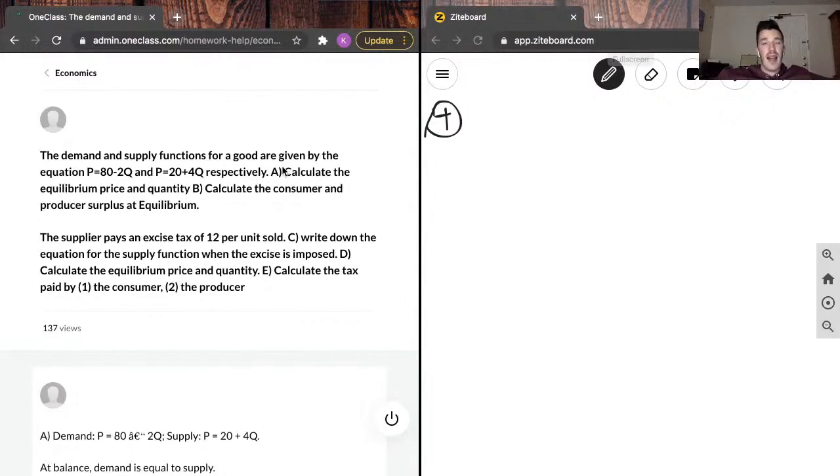Question 5. The supplier pays an excise tax of 12 per unit sold. Write down the equation for the supply function when the excise is imposed.